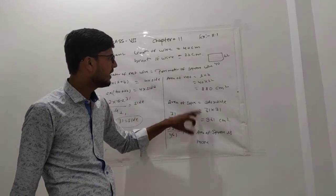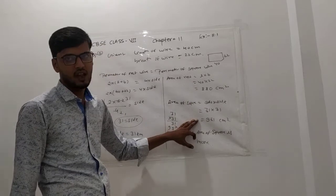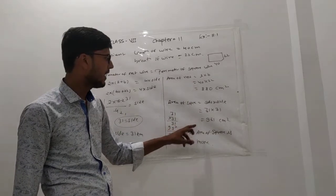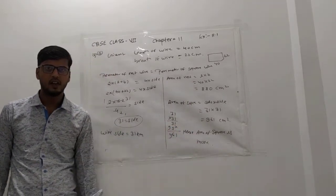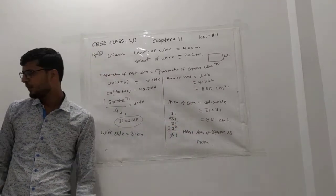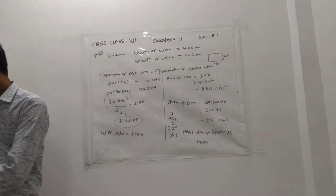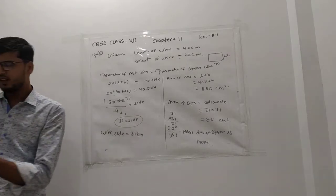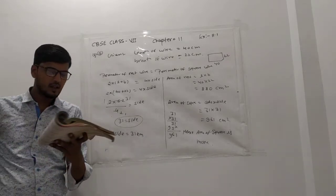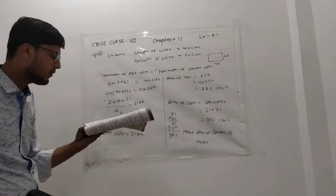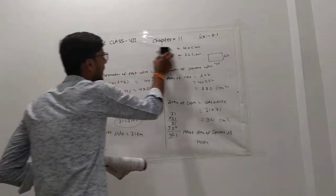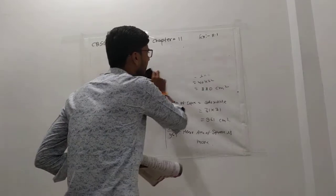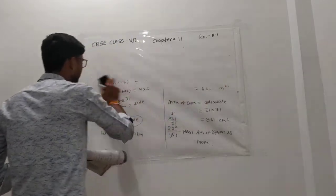The area of the square is 961 cm², which is more. Now question number 7: the perimeter of a rectangle is 130 cm.